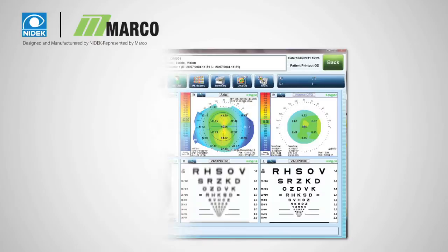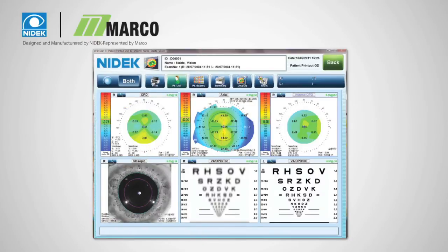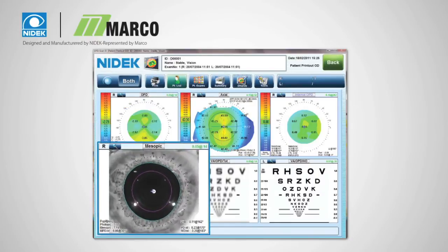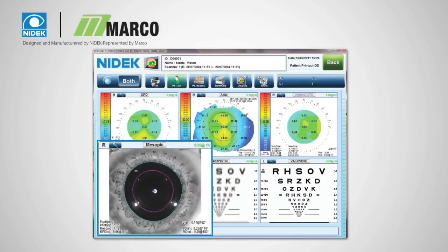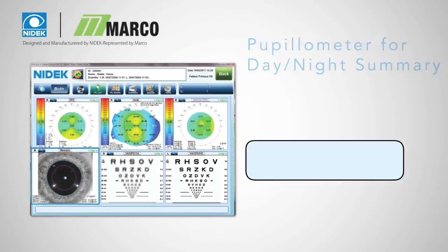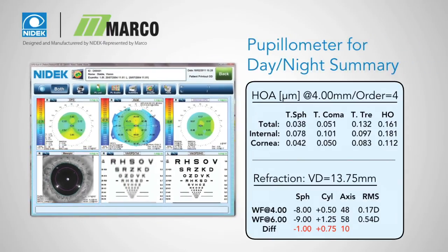The pupilometer shows the photopic and mesopic pupils, giving you day-night differences in prescriptions. The day-night summary will tell you which patients have night driving issues that may require a second prescription.